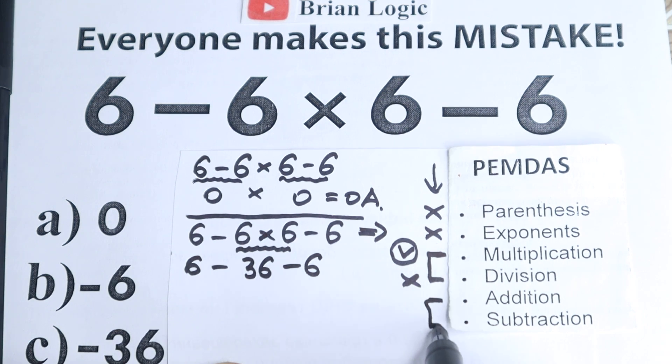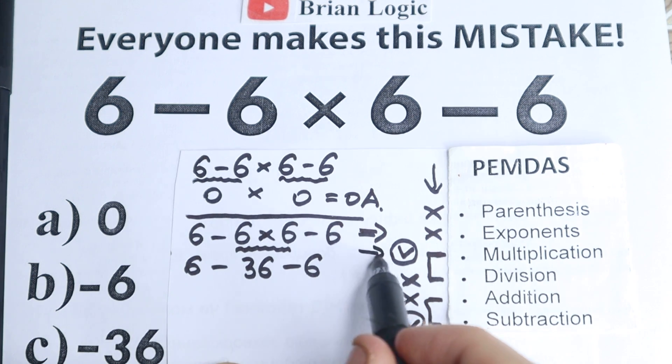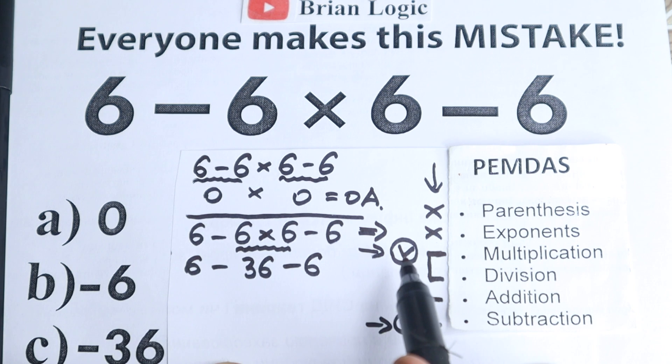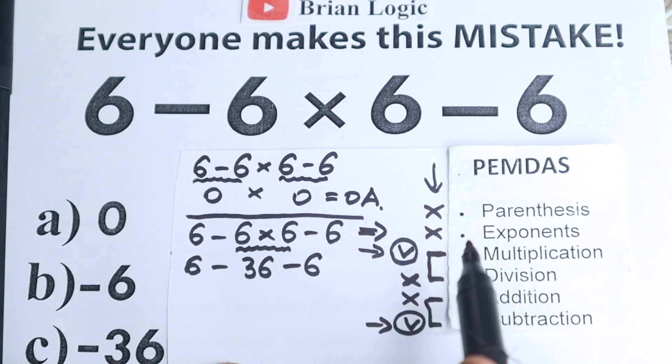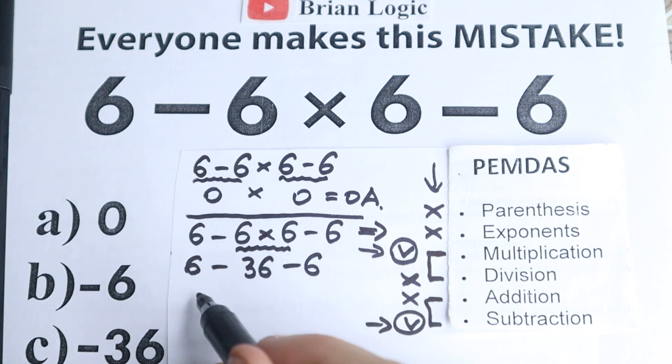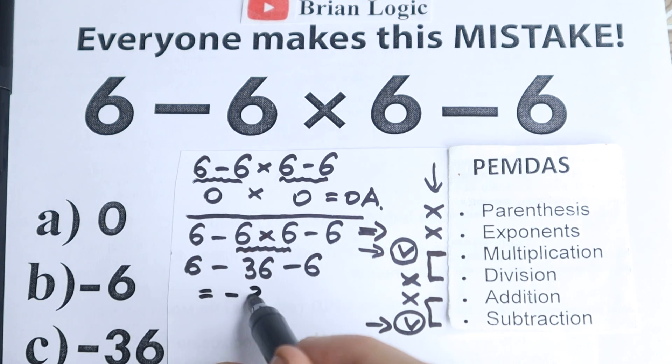Last step, addition and subtraction. We have subtraction part, and we don't have addition. So we have only two steps: first multiplication, second subtraction. And the order is the next one: multiplication is before subtraction. Here is maybe the main rule, the main lesson I hope you learn from this video. So 6 minus 36 minus 6, this is equal to minus 36.